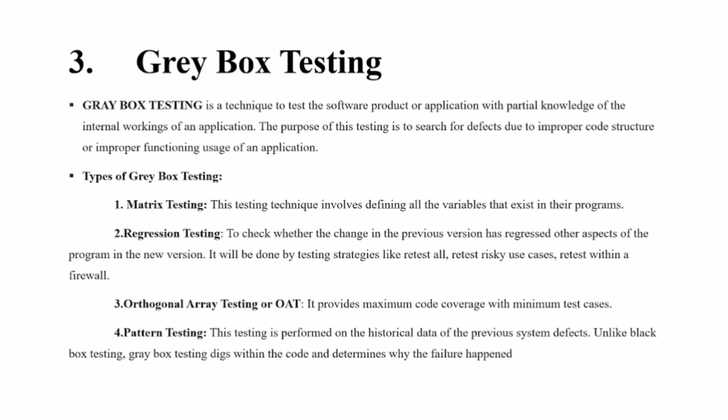Matrix testing involves defining all the variables that exist in the program. Regression testing checks whether a change in the previous version has regressed other aspects of the program in the new version. It is done using testing strategies like retest all, retest risky use cases, and retest within a firewall. Orthogonal array testing or OAT provides maximum code coverage with minimum test cases.